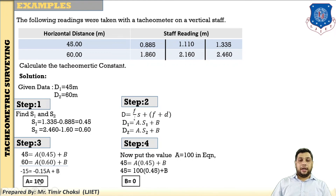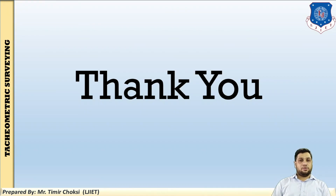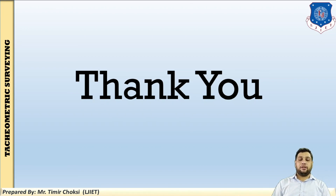Solving the two equations, the multiplying constant A equals 100 and the additive constant B equals 0. This example is based on calculating and comparing the tachymetry constant — or stadia constant — with the value given by the manufacturer. Generally A equals 100 and B equals 0. You will check on a page that you have conducted all the survey accurately. In this video I have explained the fixed hair method, the difference between the stadia method and tangential method, fixed hair method versus movable hair method, case number one of the fixed hair method when the line of sight is horizontal and staff is vertical, and taken one example for finding the tachymetric constants. Thank you for watching.